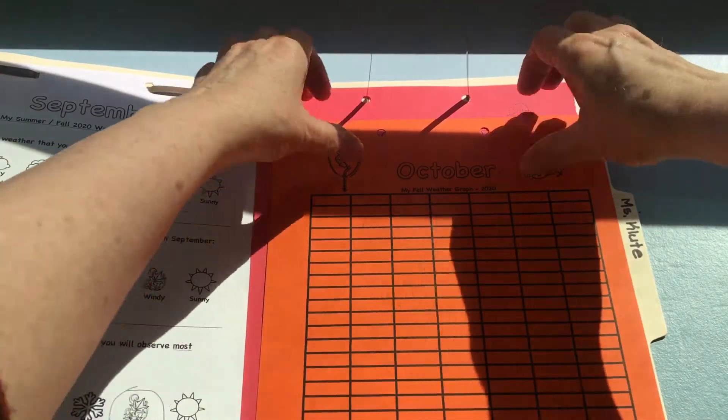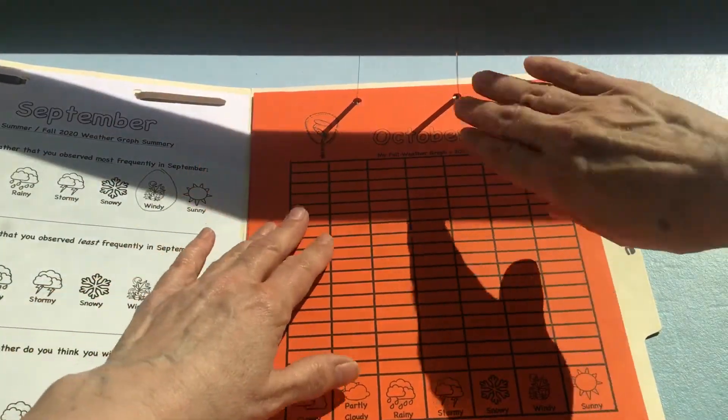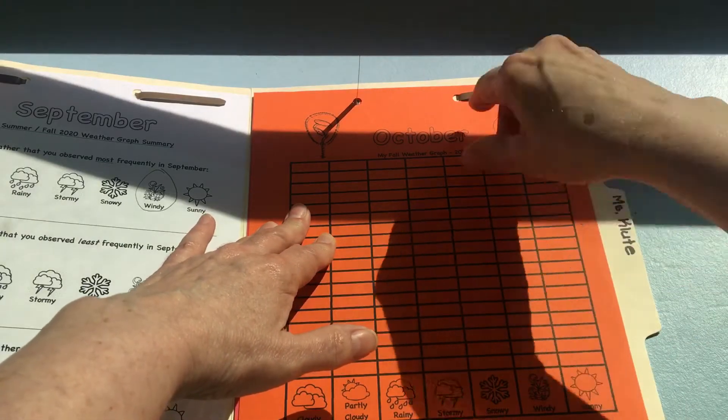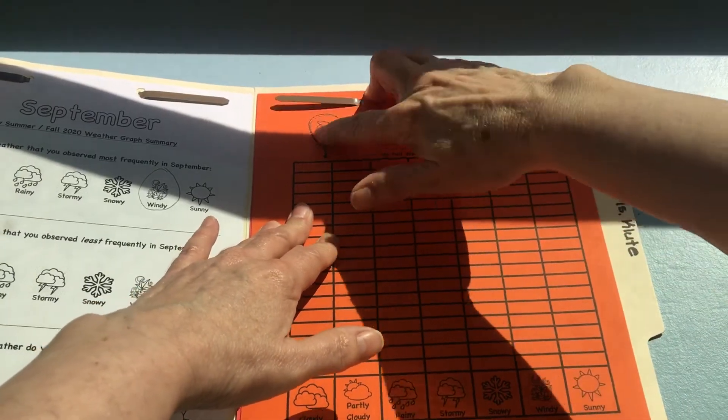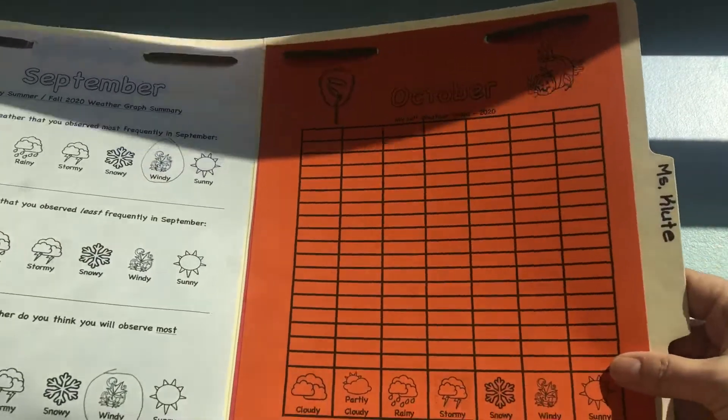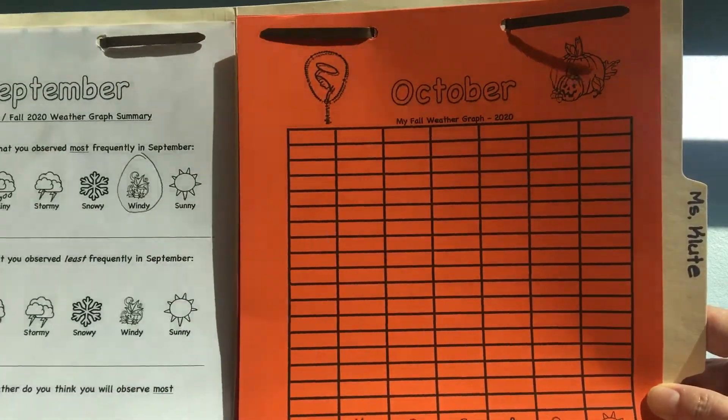I'm going to put October on there and you'll see on the October chart we have a jack-o'-lantern, that's going to happen this month. And we also have Mary and the rosary because this is the month of Mary and the rosary as well.